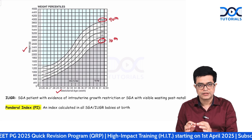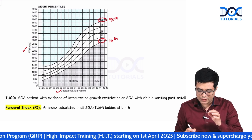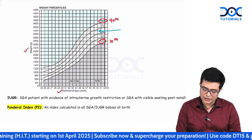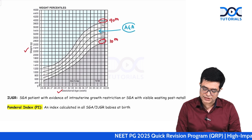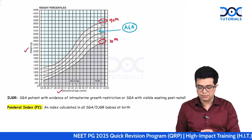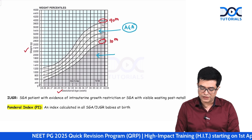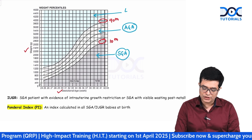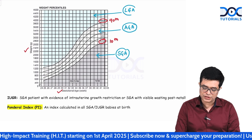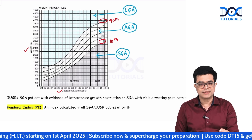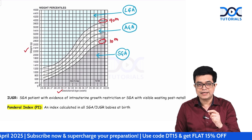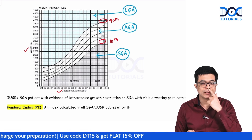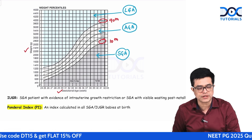When a child is born, you take the birth weight and gestational age and plot on the chart. If the child lies between the 10th to 90th centile, the child is appropriate for gestational age. Below the 10th centile is small for gestational age. Above the 90th centile is large for gestational age. This method is more cumbersome but gives more information and is better for risk assessment.